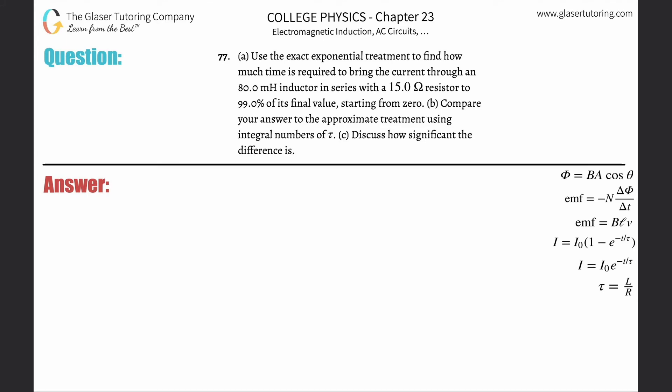Number 77, letter A: Use the exact exponential treatment to find how much time is required to bring the current through an 80 millihenry inductor in series with a 15 ohm resistor to 99% of its final value, starting from zero. All right, so we need to find how much time is required, and since it's starting at zero, we're going to use the growth form of this exponential.